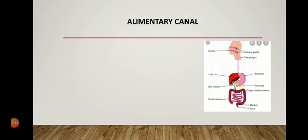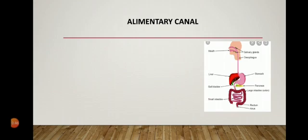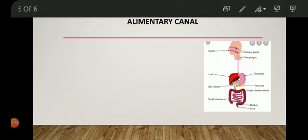The alimentary canal is a long tube running from the mouth to the anus of a human being, in which digestion and absorption of food take place. It is also known as the gut or digestive tract, and in a normal adult human being it is approximately 8 to 9 metres long. Its parts include the mouth or buccal cavity, esophagus (also called the food pipe), stomach, small intestine, large intestine, rectum, and anus. Three glands are also associated with it: the salivary gland, liver, and pancreas.